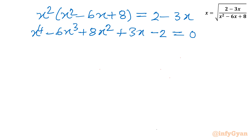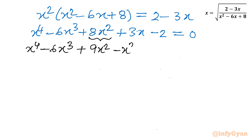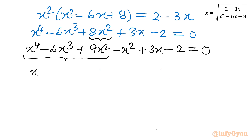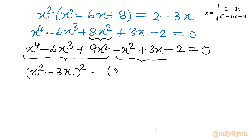Now I will split the middle term 8x squared by writing 8 as 9 minus 1, giving 9x squared minus x squared. So the expression becomes x to the power 4 minus 6x cubed plus 9x squared, minus x squared plus 3x minus 2, equals 0. The first three terms form a perfect square: (x squared minus 3x) squared. You can verify: a squared minus 2ab plus b squared, where a equals x squared and b equals 3x, giving 9x squared and minus 6x cubed. From the next two terms I take minus common: minus (x squared minus 3x), then minus 2, equals 0.